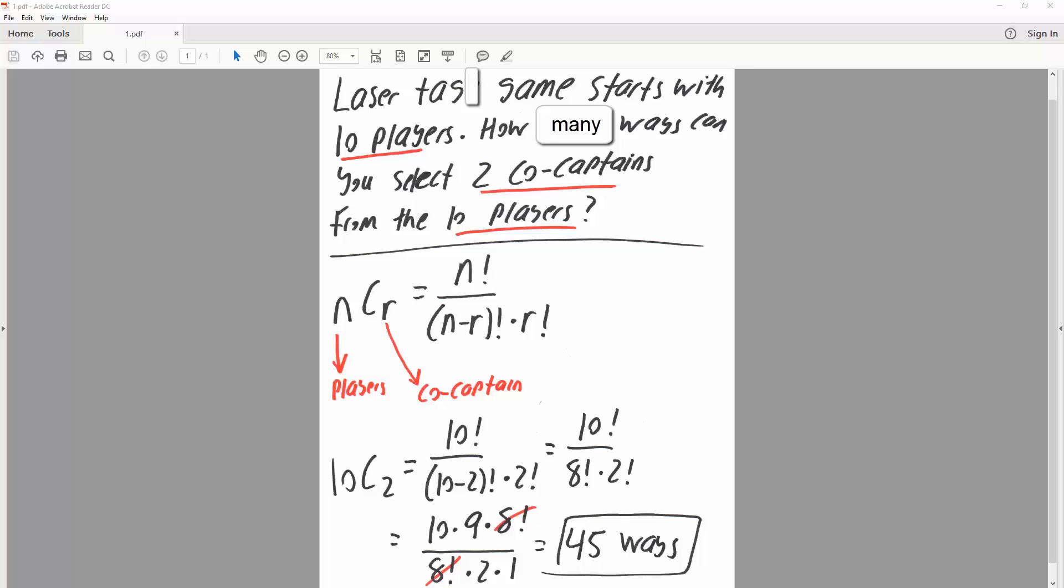In this video, we will solve a combination problem where we have N objects taken R at a time. So we have a laser tag game that starts with 10 players, and we want to know how many ways can you select two co-captains from 10 players.